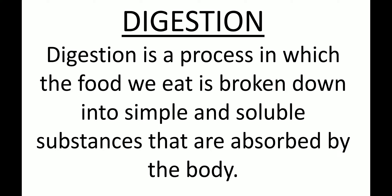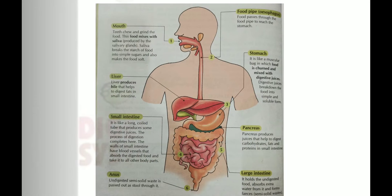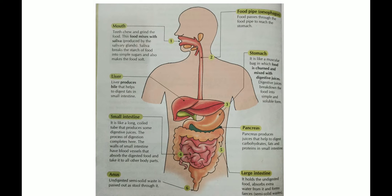First of all, we are going to look at the digestive system — the human digestive system. As you all can see here, the human digestive system consists of a number of organs. It starts from the mouth all the way to the anus.